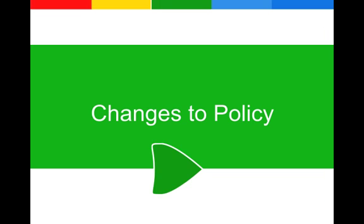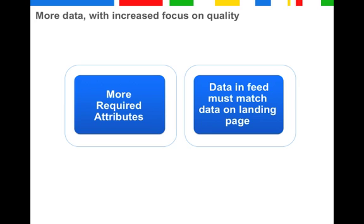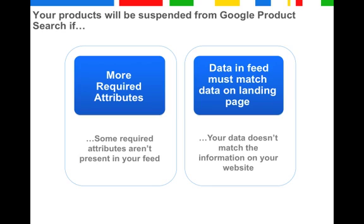We are not just making changes to our feed spec requirements—we are also introducing new policies. As you just learned, we require more data now and have an increased focus on data quality. Your data in your feed, therefore, has to match the data on your landing page. That means your account will be suspended from product search if some required attributes aren't present in your feed, and/or your product data doesn't match the data on your landing pages.